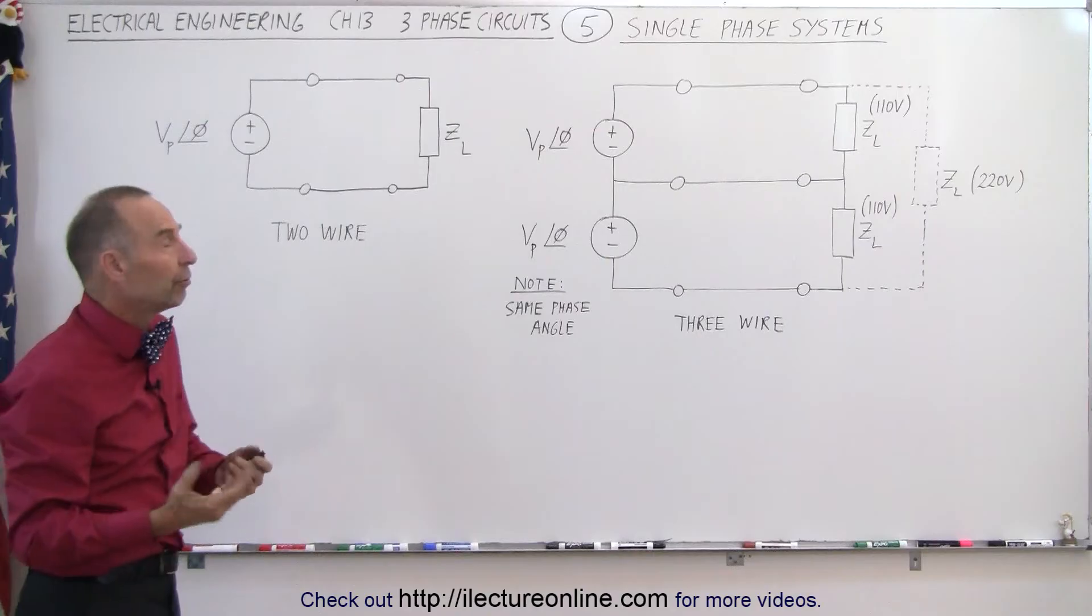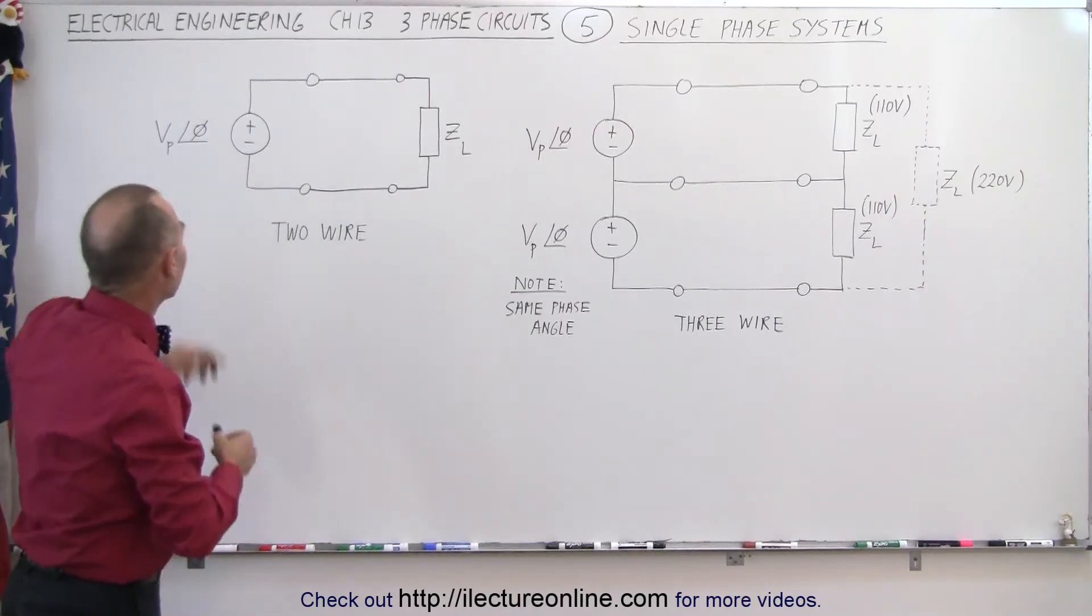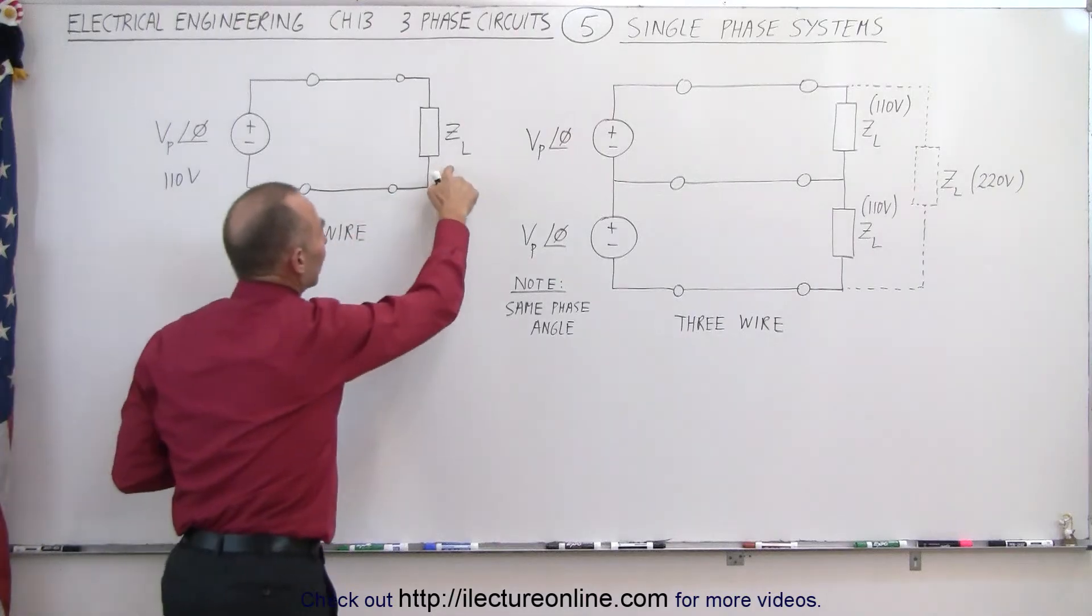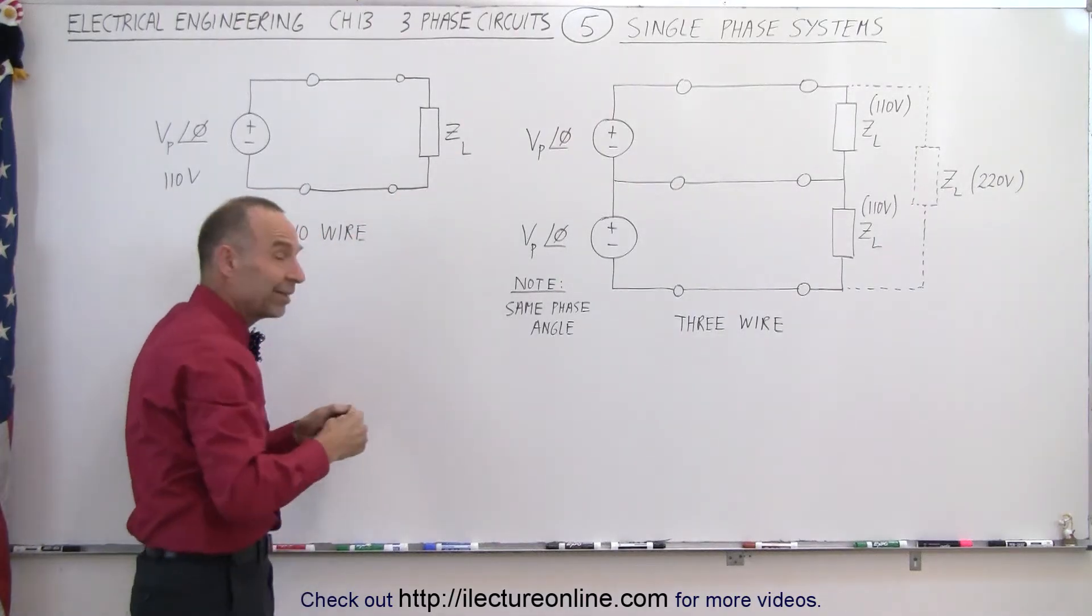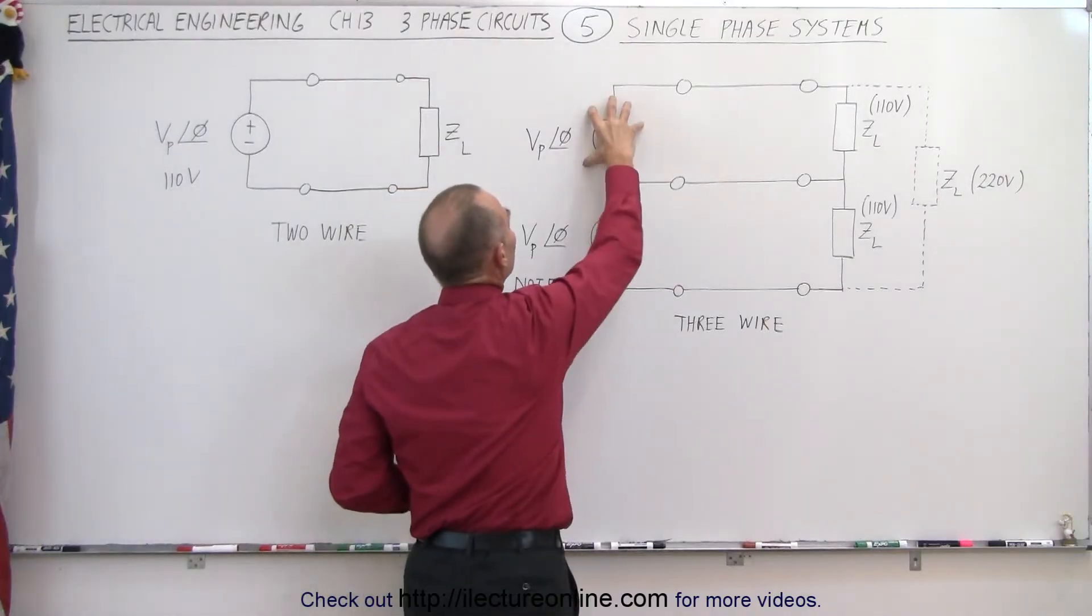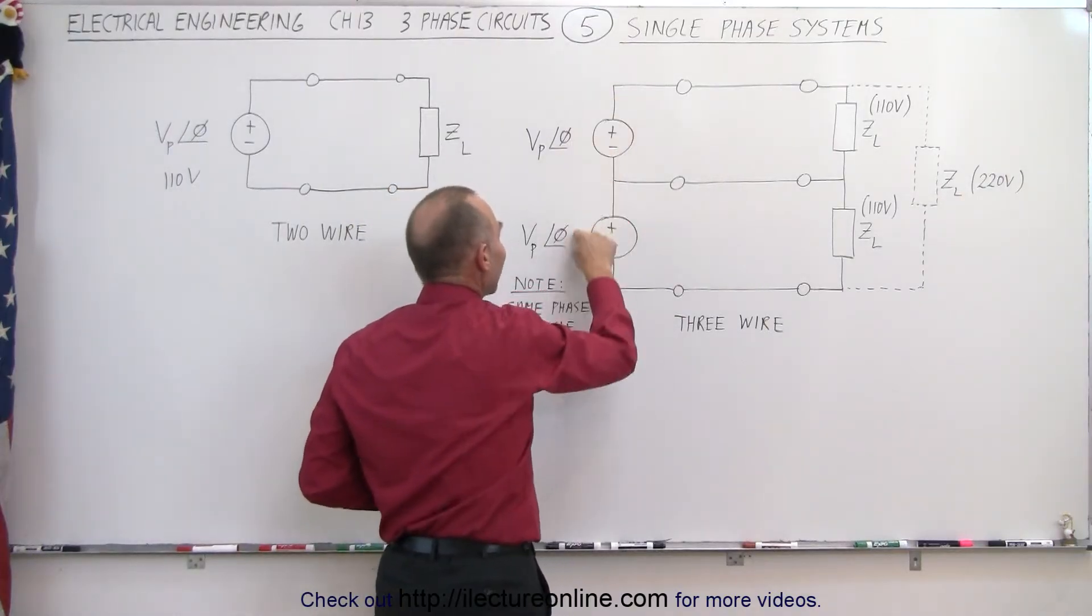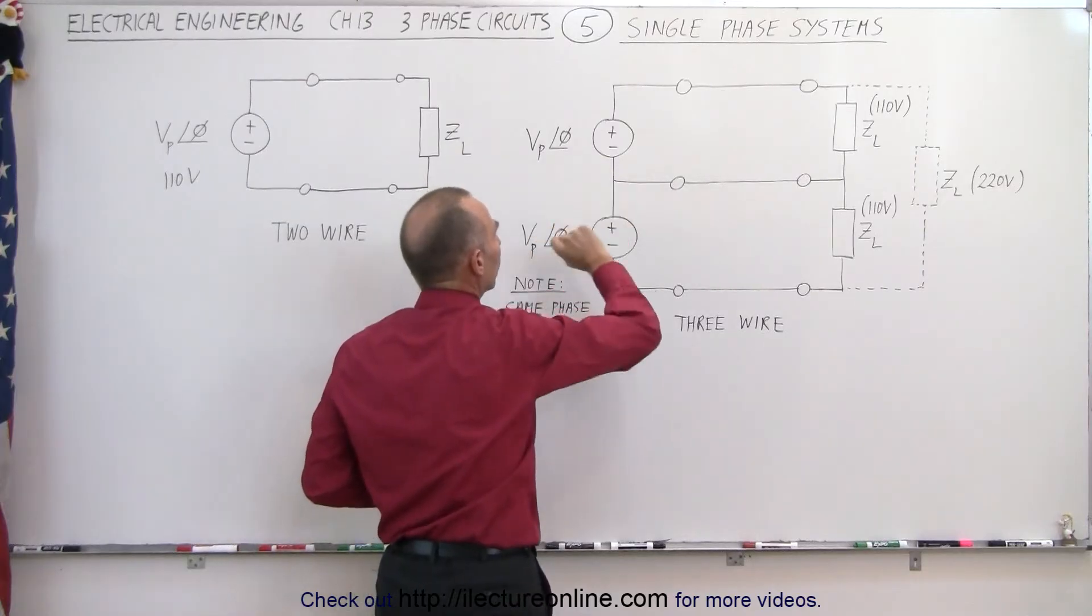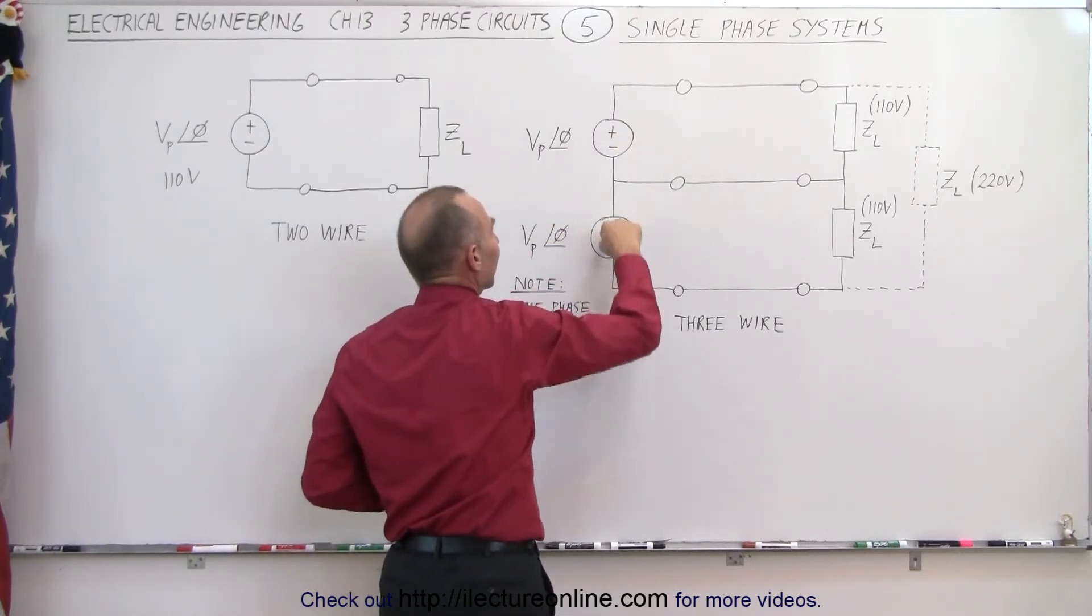If we want additional voltage, if this is not enough, let's say that this is 110 volts, and we want to connect something that requires 220 volts, we can still do that with a single-phase system. If we have two voltage sources like this at the same phase node, we have the same phase angle here between the two voltage sources, but when they're in series like this, we can actually have the voltage additive.